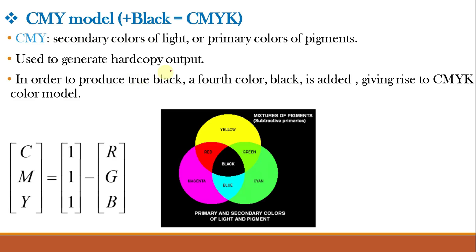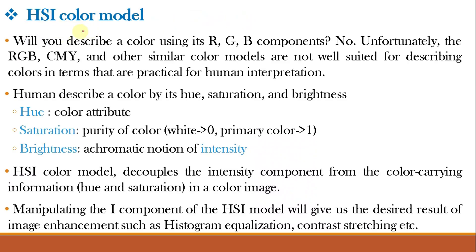Color printers and copiers require CMY data input or perform RGB-to-CMY conversion internally. Equal amounts of pigment primaries cyan, magenta, and yellow should produce black, but in practice combining these colors for printing produces a muddy-looking black. So in order to produce true black, a fourth color — black — is added, giving rise to the CMYK color model. Since B is already used for blue, black is denoted K, the last letter of the word black. K stands for key color.